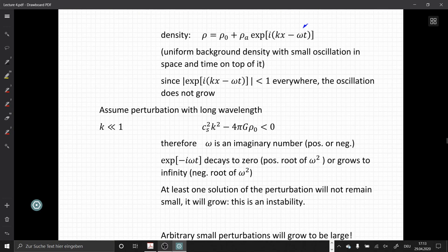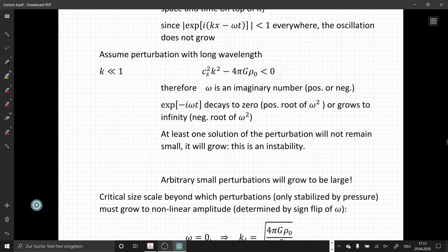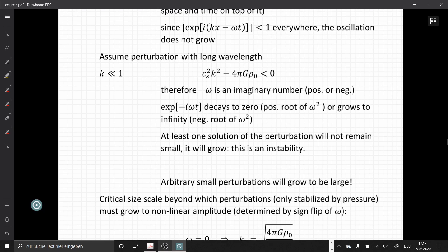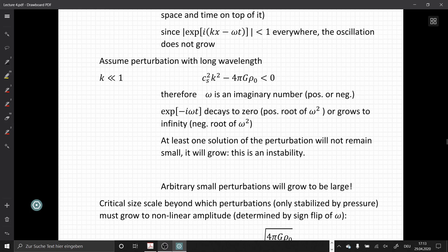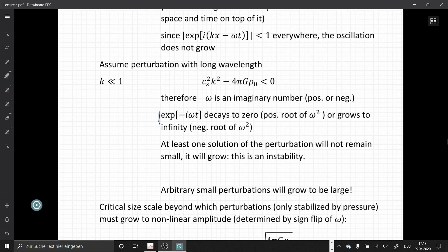When we look at the opposite case, long wavelengths equaling very small wave numbers, then this term is smaller than zero, which makes ω an imaginary number. The factor e^(-iωt) can either decay to zero for the positive root of ω² or grow to infinity for the negative root. This means at least one solution will not remain small. It will grow. This is the definition of an instability.